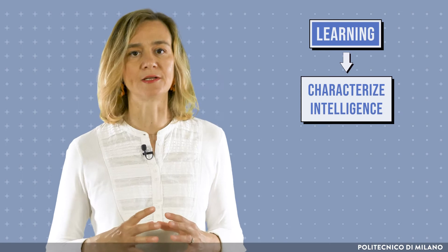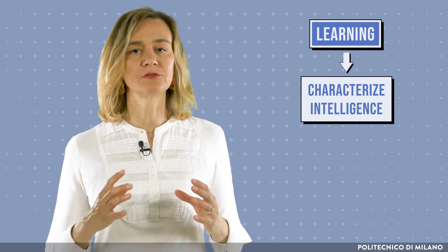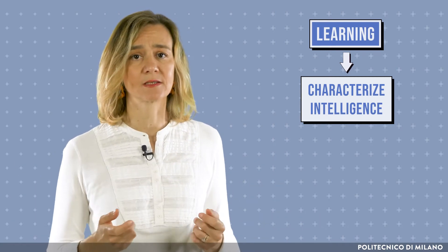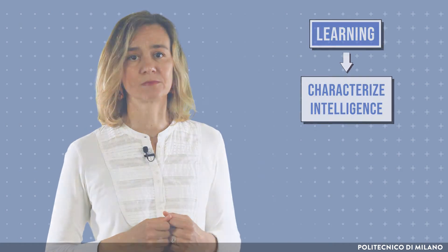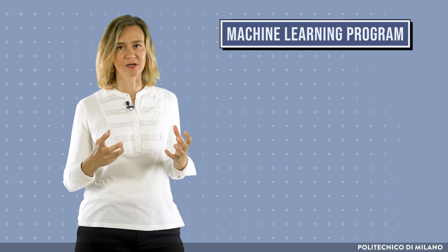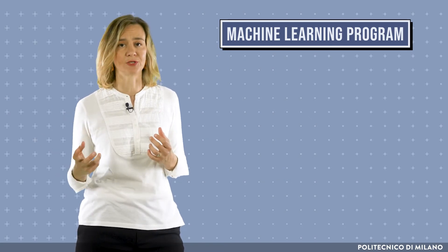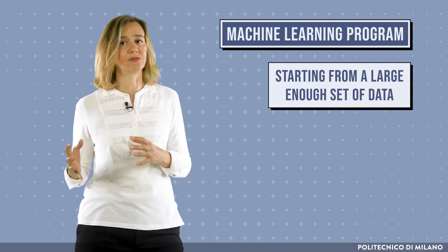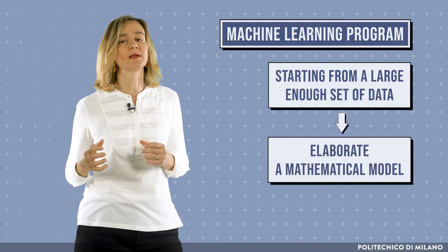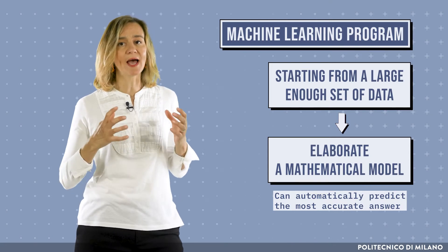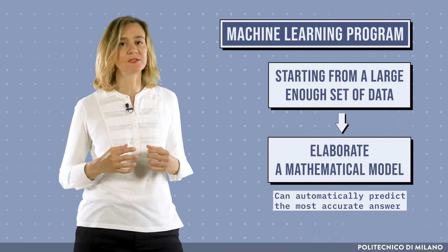Learning is one of the key abilities to characterize intelligence. A program able to learn from experience can adapt to novel situations and perform tasks without explicit instructions. A machine learning program does not possess the precise instructions to be executed in a given situation. Rather, the program, starting from a large enough set of data, is able to elaborate a mathematical model. This model can automatically predict the most accurate answer according to the received input.